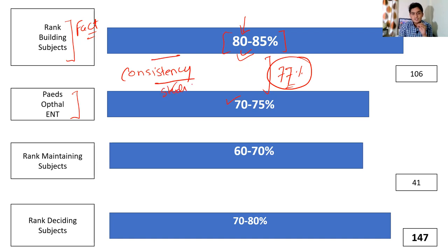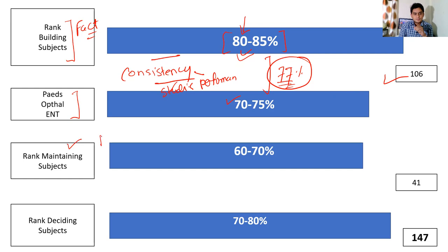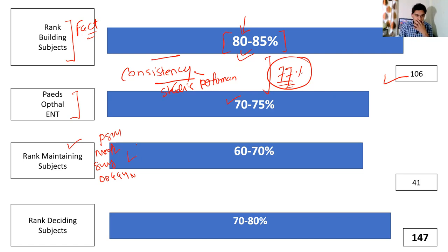On an average, combining all rank-building subjects, out of 137 questions with 77% accuracy, you can get around 106 questions right. For rank-maintaining subjects - the big four: PSM, medicine, surgery, and obs-gyn - medicine keeps changing, they ask difficult clinical-based questions, surgery can have very difficult questions, PSM can be tricky. But if you cover the important topics, you can definitely score better. It is okay to accept 60 to 70% accuracy as a minimum in these subjects - you should aim higher.